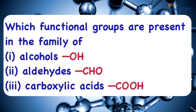For ketones, the functional group is the C=O group. Halogens are also present — such as bromo and chloro groups. These are all the important functional groups you need to keep in mind.